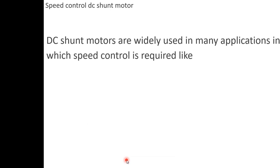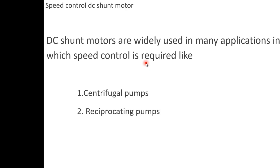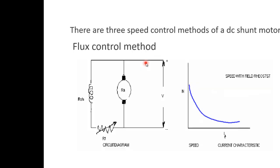The speed control method of a DC shunt motor is important because DC shunt motors are widely used in applications requiring speed control, such as centrifugal pumps, reciprocating pumps, fans, blowers, lathes, washing tools, wood tools, etc. There are three speed control methods for a DC motor. We will now look at the first method: the flux control method, also called the field control method.